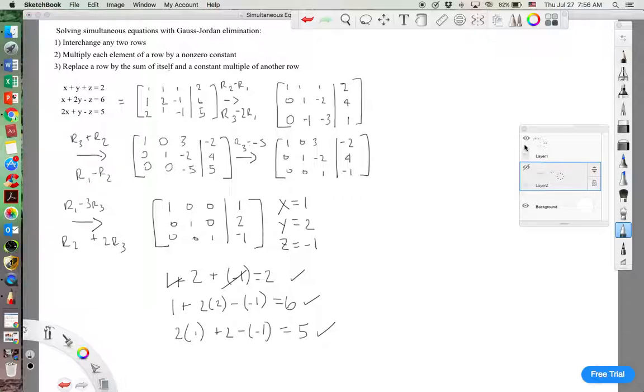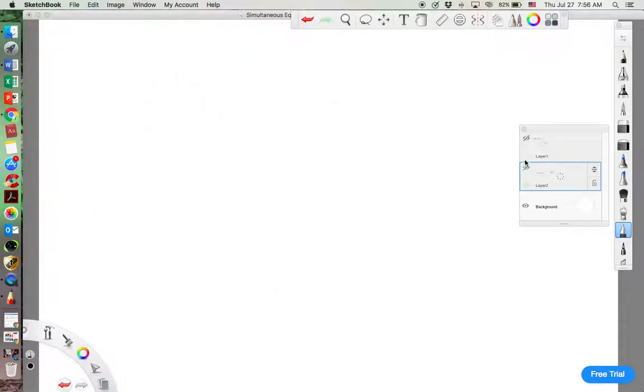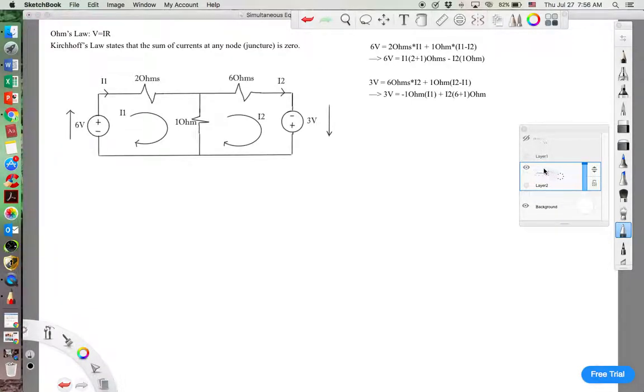So now let's take a look at an application where we use matrices to solve the problem involving Kirchhoff's and Ohm's Law. Remember Kirchhoff's Law tells us that the sum of all currents in any node or juncture is equal to 0. And Ohm's Law is just simply voltage equals current times resistance, or V equals IR.